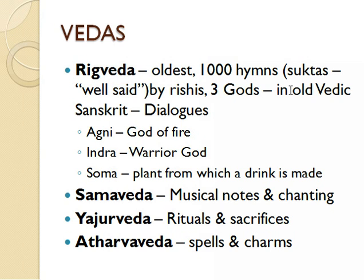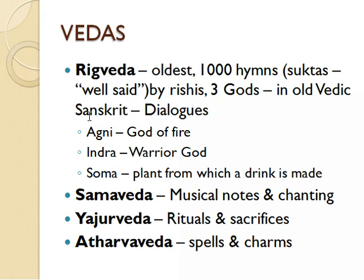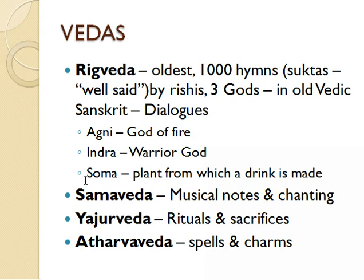The Rig Veda consists of 1000 hymns. 'Sukta' means 'well said.' These were composed by Rishis and praise three gods, written in old Vedic Sanskrit with dialogues. The three gods were Agni, the god of fire; Indra, the warrior god; and Soma, a plant from which a drink is made.